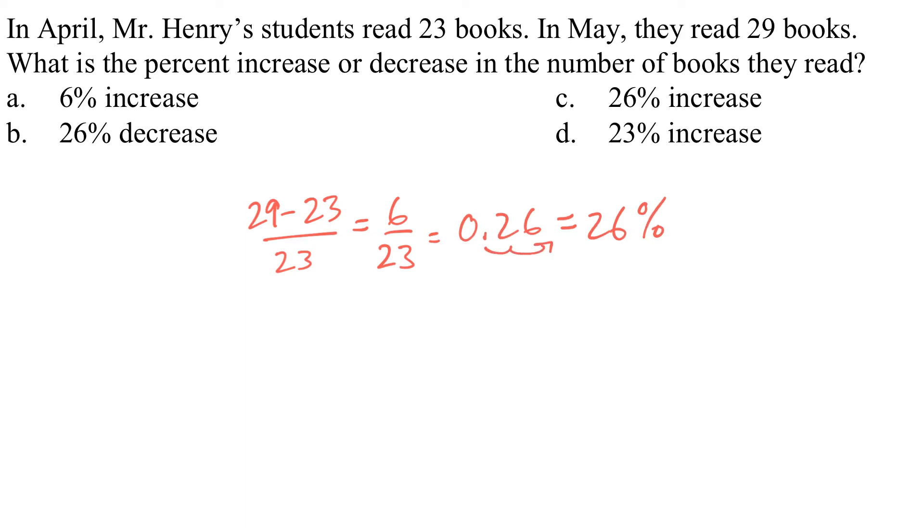We have two answers here, B or C. One is a decrease and the other one is an increase. Let's see, we go from 23 to 29. Well, 29 is an increase from 23, so it's going up in value. That means it's an increase, and C is our correct answer.